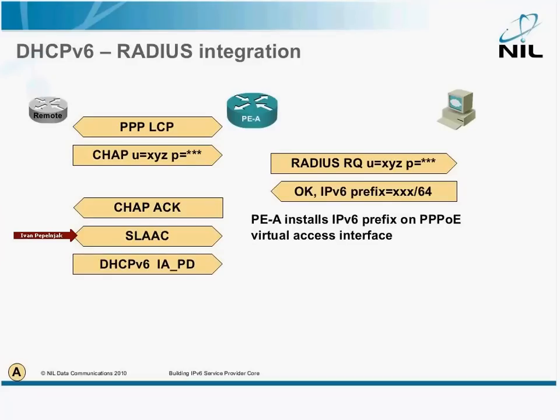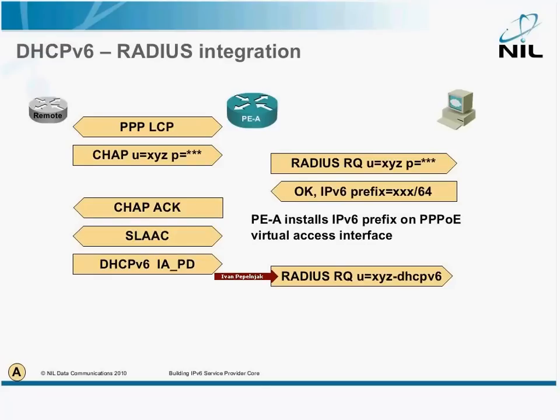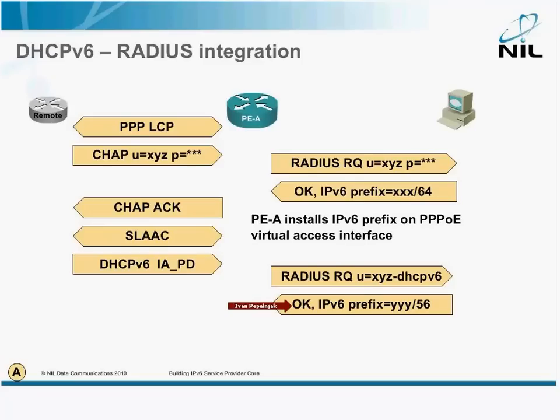Now, there are a few things we can do. The temporary solution — let's hope it stays temporary — is implemented in IOS at the moment. The PE sends another RADIUS request to the RADIUS server with a different username: it uses the same username as before and appends "-dhcpv6" to it, with no password — the password is empty. The RADIUS server should then reply with a different IPv6 prefix, and that other IPv6 prefix is passed to the remote CPE in the DHCPv6 reply.